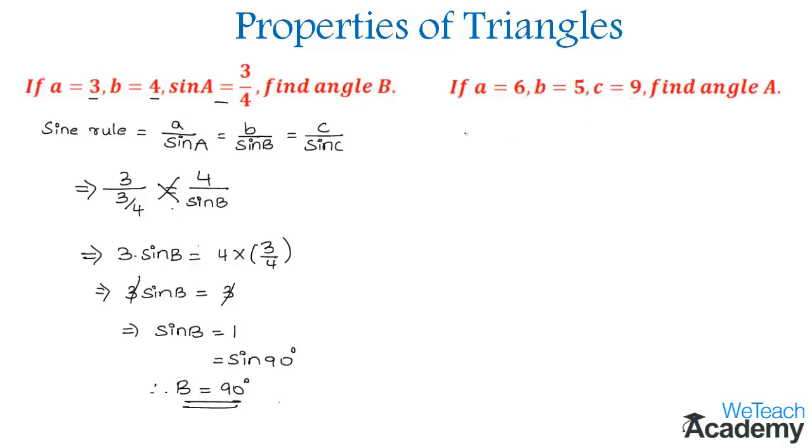In order to find angle A, let us use the formula: cos A = (B² + C² - A²) / (2BC).